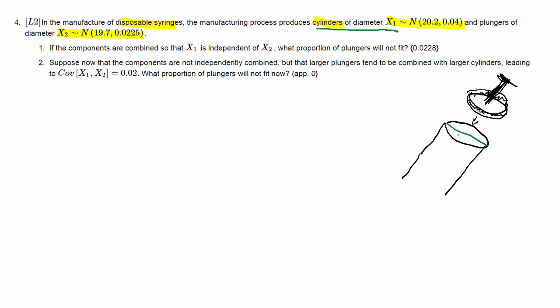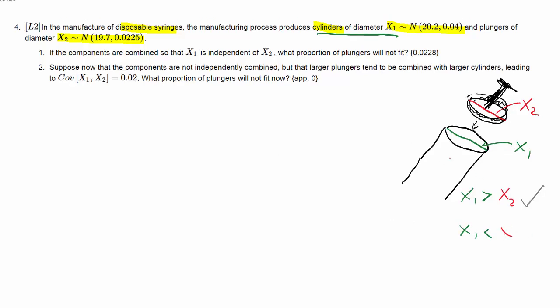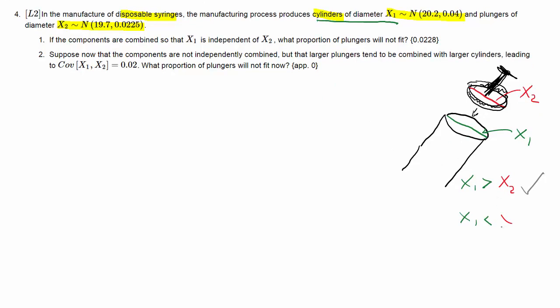So what we are interested in is the diameter of the cylinder, we call that X1, and the diameter of the plunger, we call that X2. Both of these are produced with some random variation, and the issue is that as long as the cylinder is larger than the plunger, it's okay. Certain limits, of course, but if the cylinder is narrower than the plunger, then of course we have a problem.